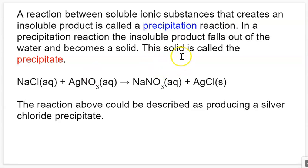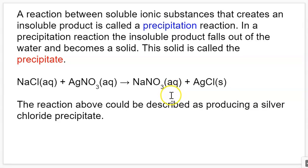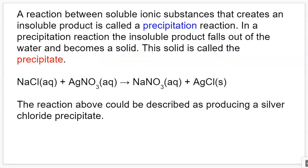We watch the solid fall out of the solution. So if we look at this example, we have sodium chloride that is aqueous and silver nitrate that is aqueous. When we have our double replacement reaction, we end up with sodium nitrate, which is still aqueous, and silver chloride, which is solid because it is an insoluble ionic compound. So this is going to drop out of the solution, which will first look like a hazy, milky-looking substance in the liquid, but it will eventually settle to the bottom as a solid that we can remove through filtration or evaporating all of the water.